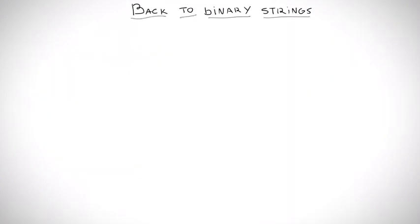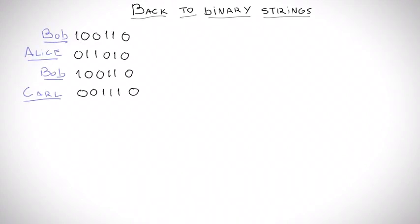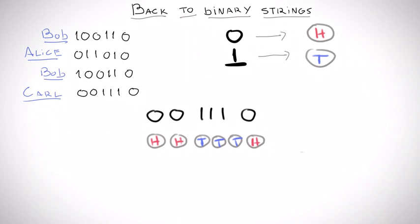Now, back to the binary strings generated by our hash function. Since we assume these strings are random, we can use a similar reasoning. Just replace zeros for heads and ones for tails. Then, for each string, we look at the streak of zeros at the beginning and ignore the rest. Longer streaks of zeros are harder to get than shorter runs exactly in the same way as in our game with coins.